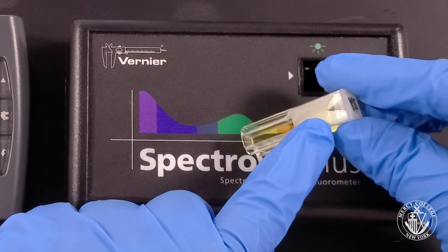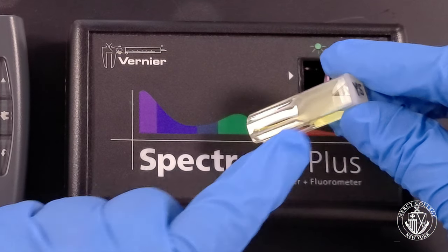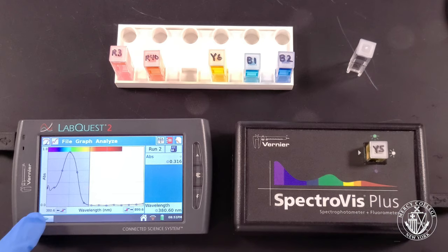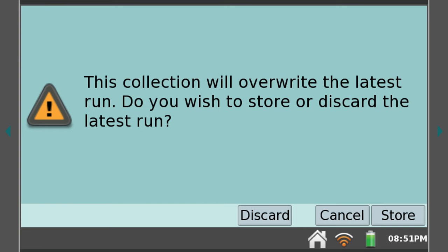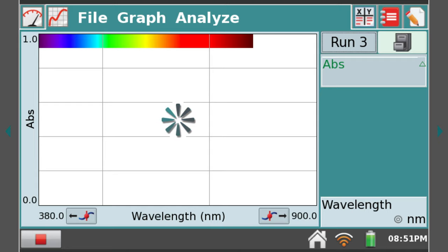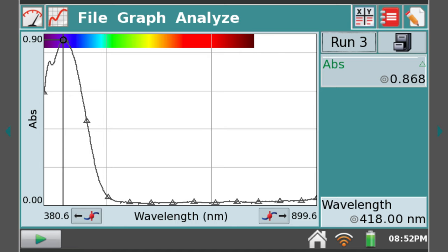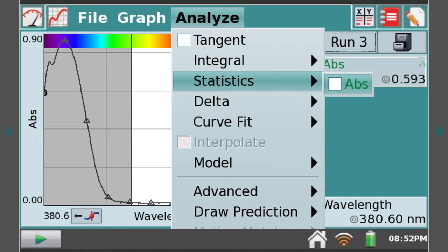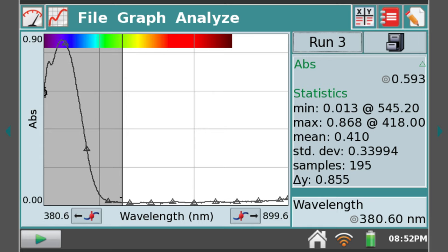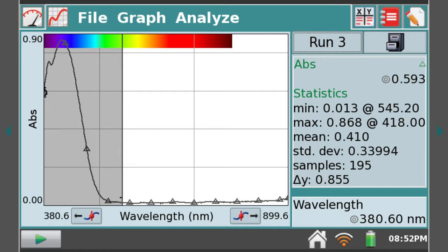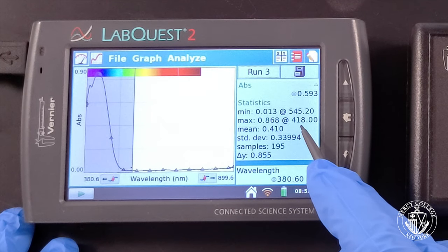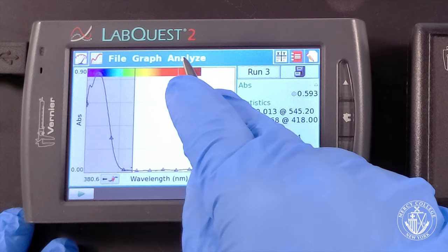Insert your next sample into the spectrophotometer, again making sure the arrow on the cuvette aligns with the arrow on the spectrophotometer. Collect your new spectrum and be sure to store the old one. Hit the Stop button to complete your data collection. Drag to select your data, and then select Statistics from the Analyze menu. Here we see that this dye absorbs in the blue-violet region of the spectrum, with a maximum absorbance of 0.868 at a wavelength of 418.0 nanometers.